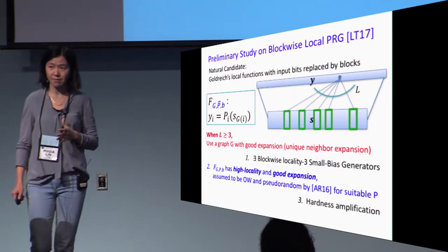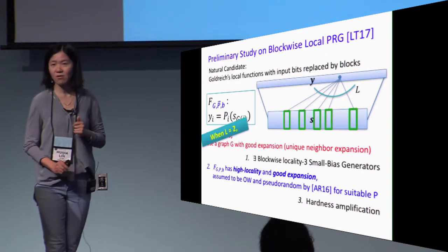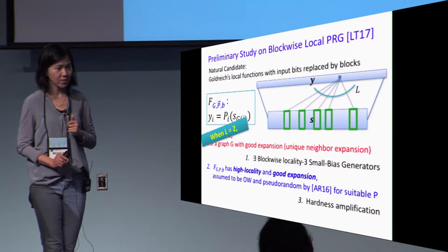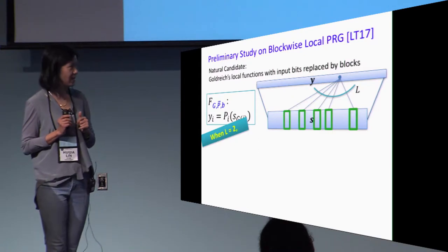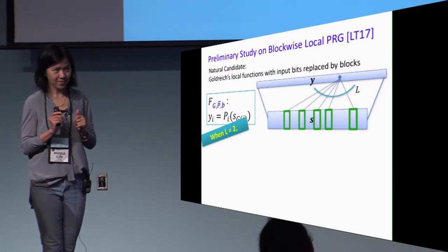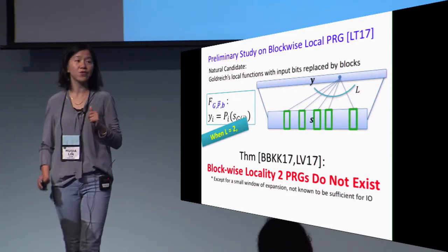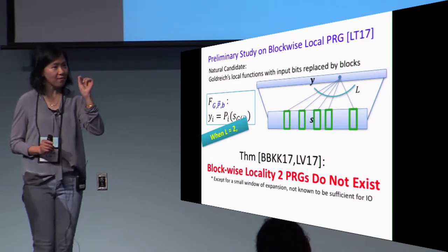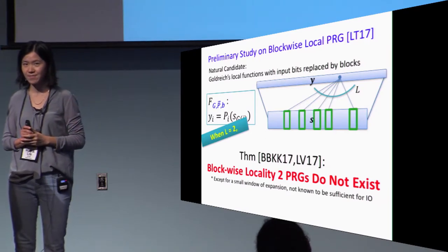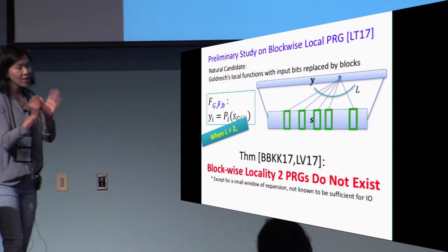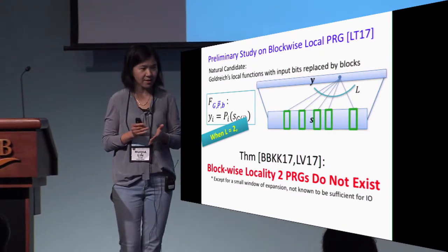This is nice. But suddenly when you go to blockwise locality equals to 2, all these properties go away because we do not have good graphs with good expansion. Furthermore, it turns out that two recent works show that such PRGs do not exist except from a very, very tiny window of expansion that are not known to be sufficient for constructing IO. I do not have much more time to delve into the blockwise local PRG. I think they are very natural primitives and they deserve more study.